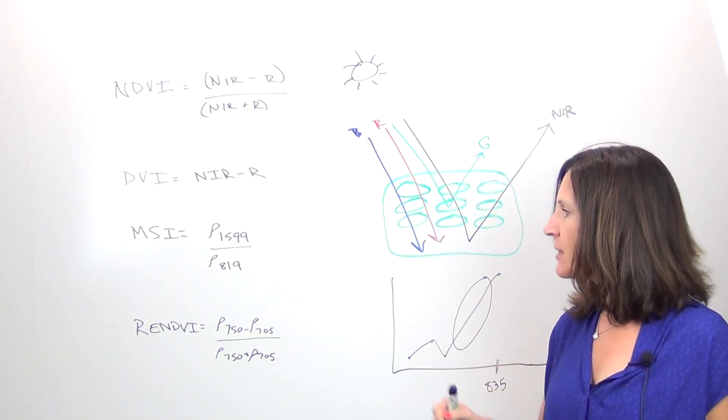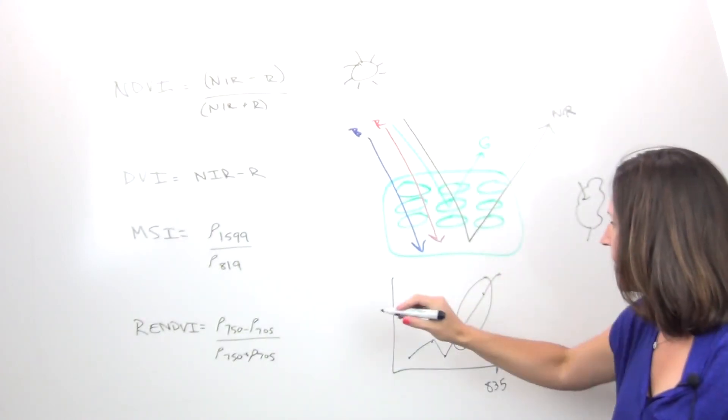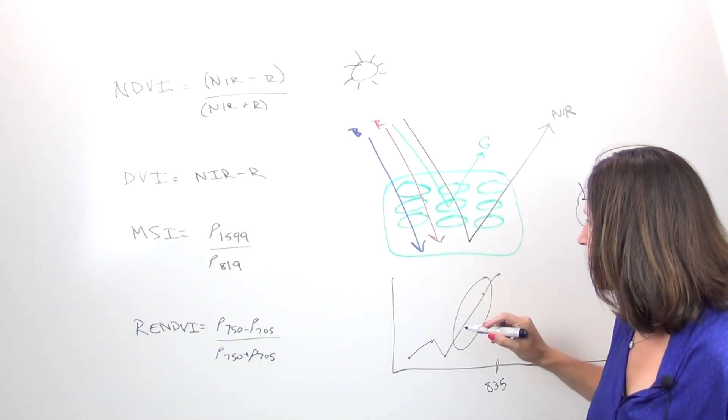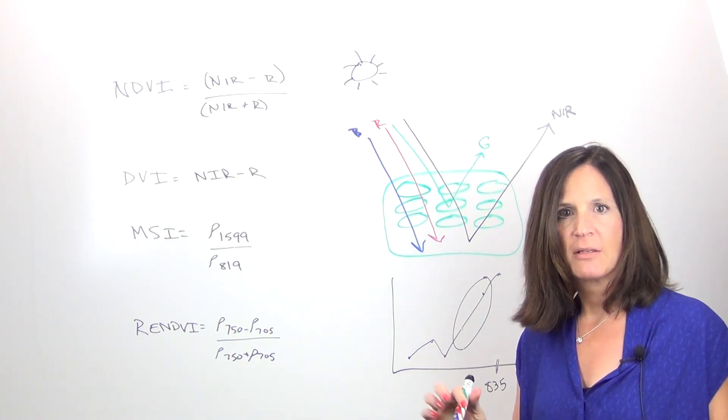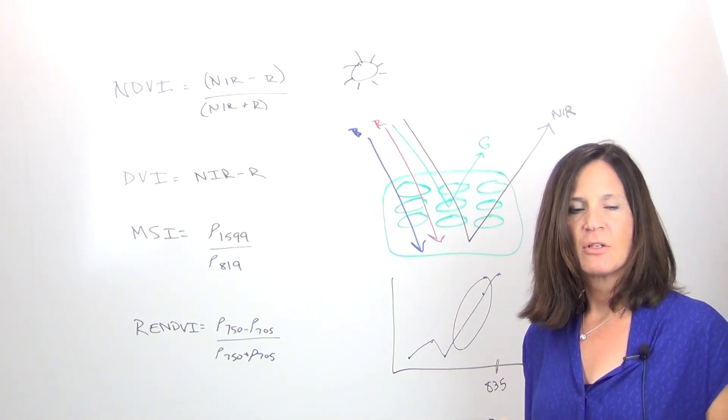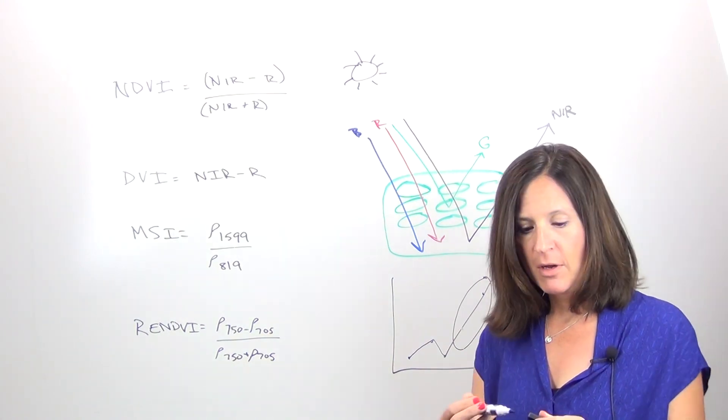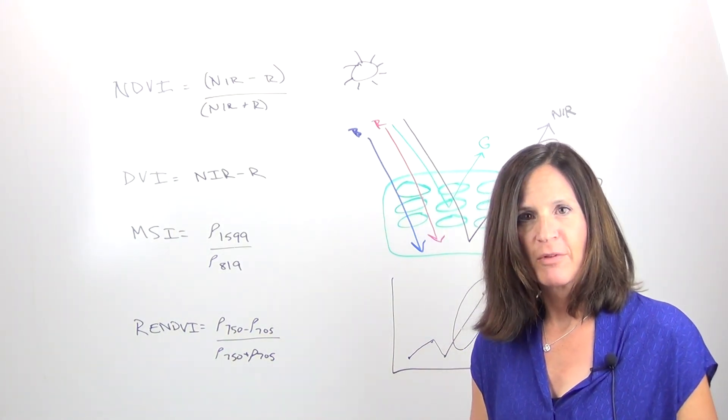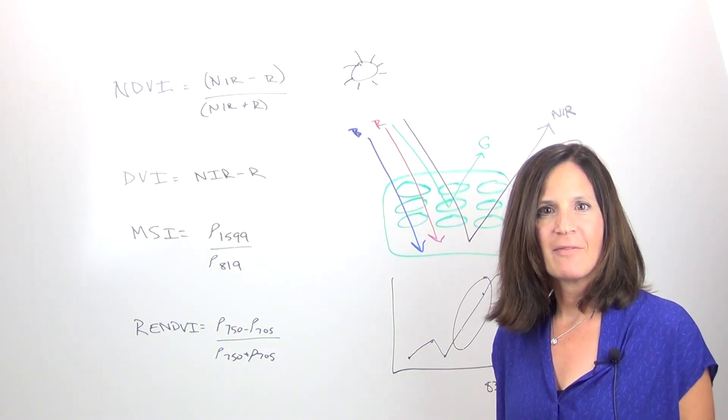So this index uses wavelengths about 750, which might be up here, and 705, which might be down here. And these changes can be picked up really well by this index to see small scale changes at very high resolution applications like precision agriculture. So read my blog tomorrow. I'll hopefully have some images to go along with all this information and talk about some other spectral indices that we have in EV. Thanks.